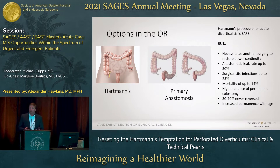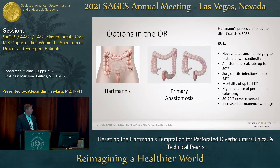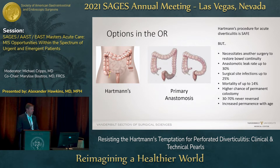Hartman's procedure for acute diverticulitis is safe — it's never the wrong answer. But there potentially could be a better answer, because doing a Hartman's procedure requires another surgery to restore bowel continuity, and it's a hard surgery. Colostomy takedowns for patients who've had a Hartman's for diverticulitis are some of the toughest surgeries, with high anastomotic leak rates, surgical site infections, mortality, and a higher chance of permanent colostomy.